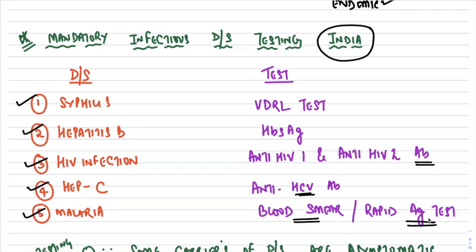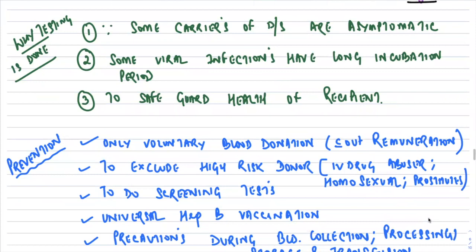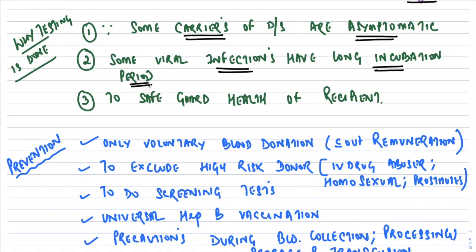Why must blood samples be screened? Some donors are asymptomatic carriers — for example chronic carriers of hepatitis B. Some viral infections have very long incubation periods during which antibodies have not yet developed, so the screening test will be negative yet the person can transmit the disease. Those in the window period or incubation period must also be tested to safeguard the health of the recipient.